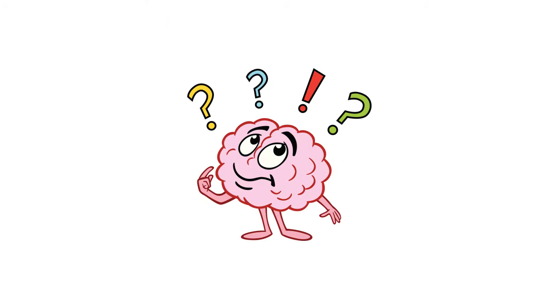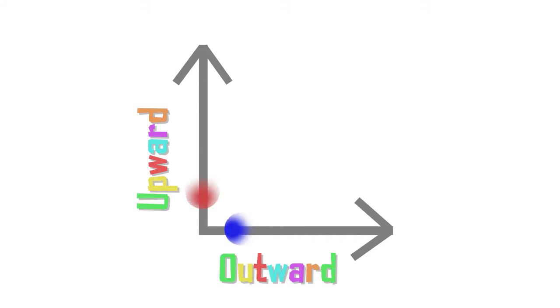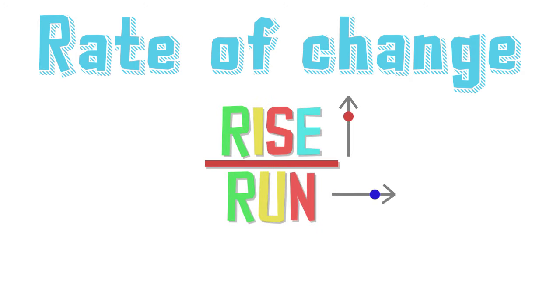In order to learn rate of change, you must understand two important facts: how the value of something goes upward with respect to the value of something going outward. In math, the rate of change is described as the rise over the run, which is also the definition of slope.